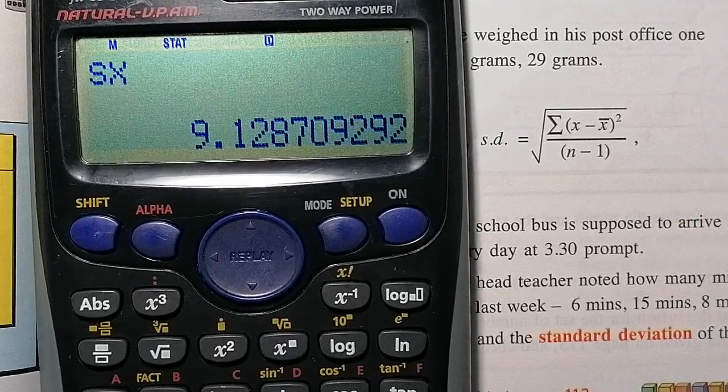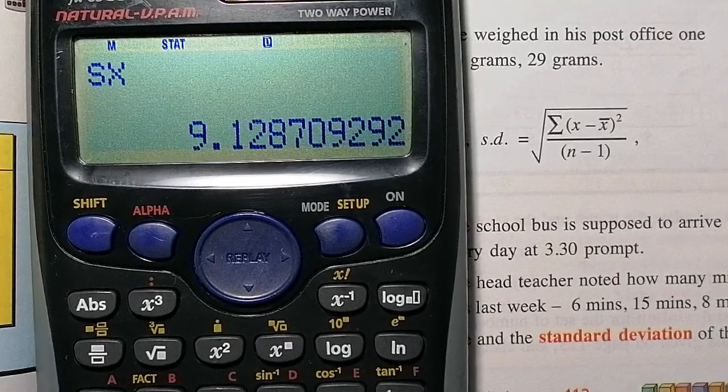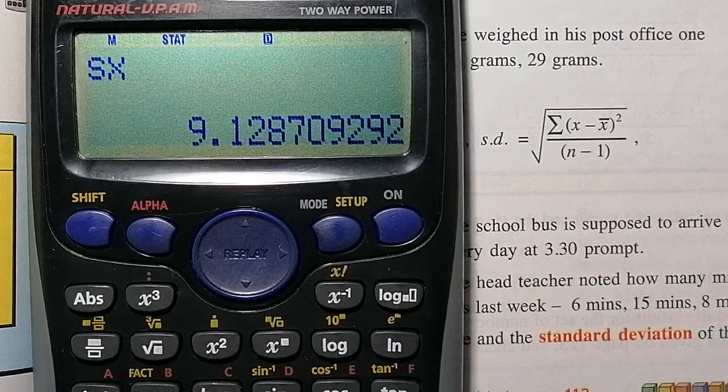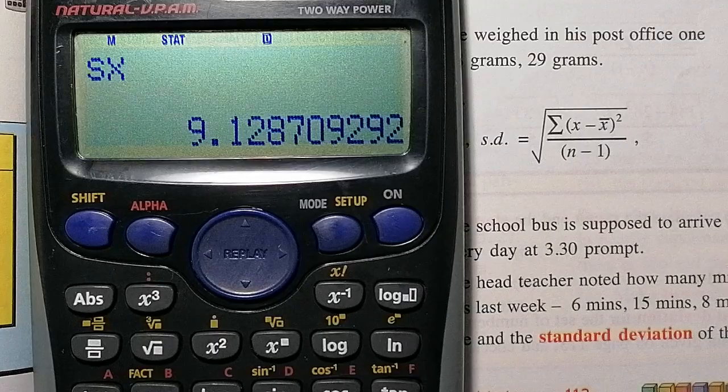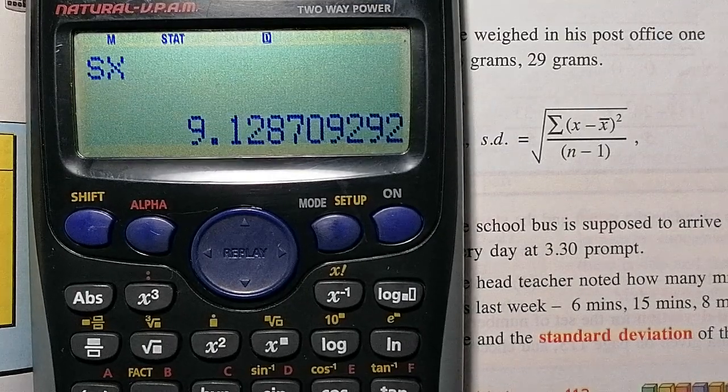If I press equals, that works out my standard deviation for me. So that's a simple way of going through. It gives you a table of values that you just enter into that table. You then cancel out it by the AC button.